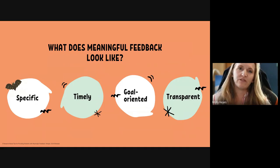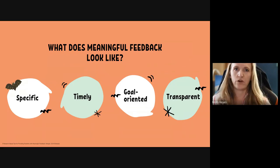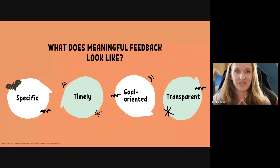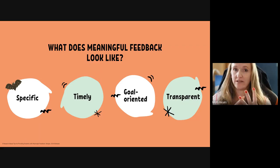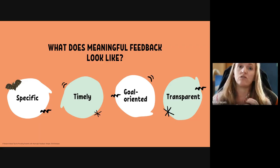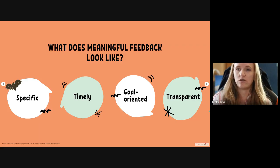When we're considering what meaningful feedback looks like, we did a lot of research, pulled a lot of articles, and found four really common ideas. One, as you were all saying in the Jamboard, it has to be specific. It has to be timely. It has to be goal-oriented. And the last piece — almost a completion of the rest — is the idea of transparency in how you communicate with your students. Let's dive into what that specificity in communication looks like.